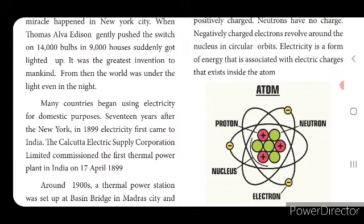Electricity came to India in 1899 — 17 years after New York. In 1899, the Kolkata Electric Supply Corporation Limited commissioned the first thermal power plant in India on 17th April 1899.